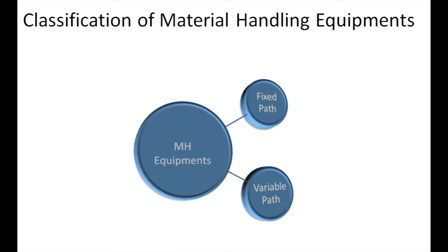Variable path equipment has no restriction in the direction of movement, although their size is a factor to be given due consideration. Trucks, forklifts, mobile cranes, and industrial tractors belong to this category. Forklifts are available in many ranges, they are maneuverable, and various attachments are provided to increase their versatility.